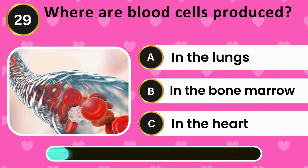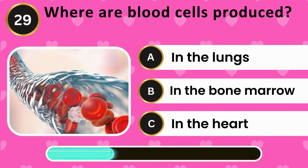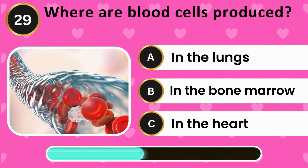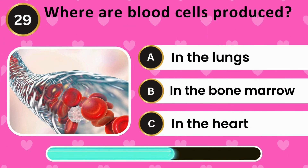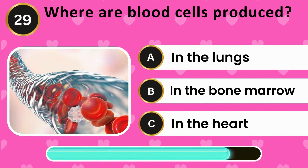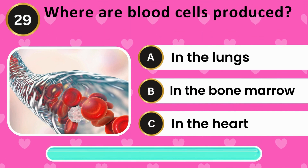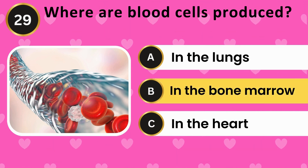Where are blood cells produced? In the lungs, in the bone marrow, in the heart. The answer is in the bone marrow.